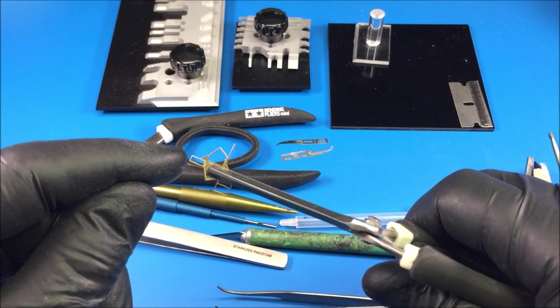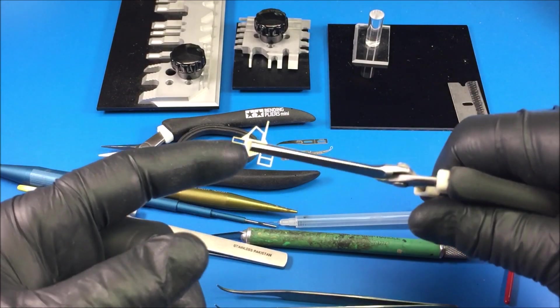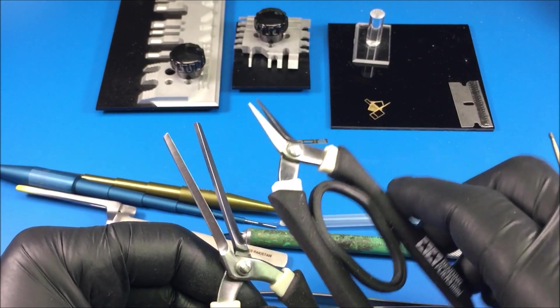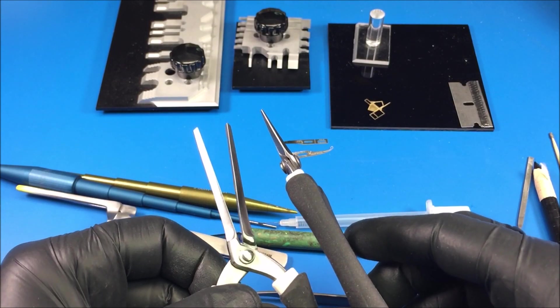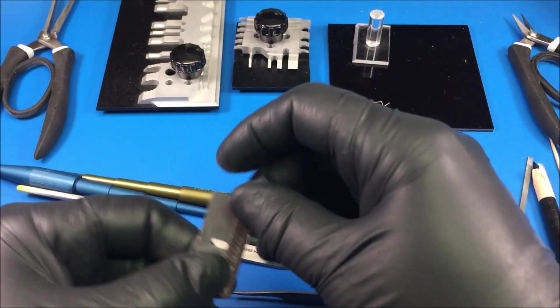These Tamiya pliers are good if you need to hold the photo etch like this. You usually have to sand off the burr once you cut the piece off the photo etch. Those are good for that and you can use them as a bending jig as well.